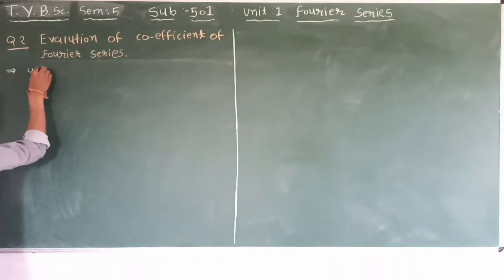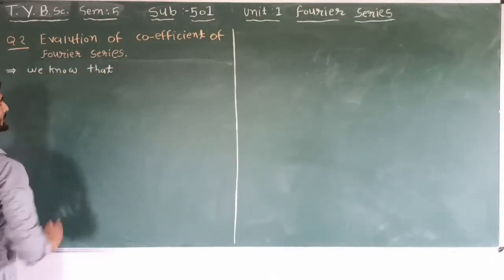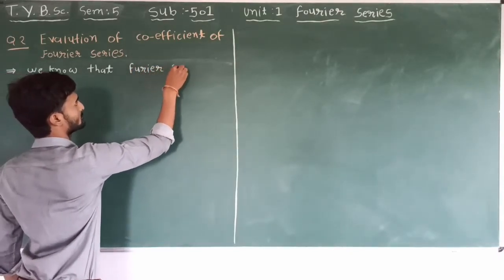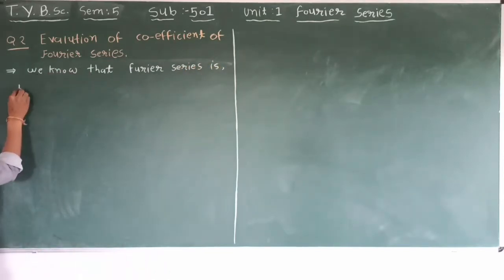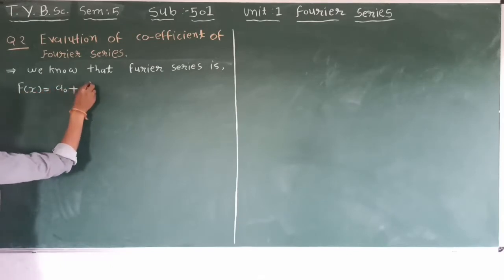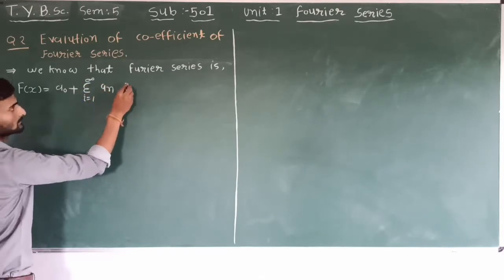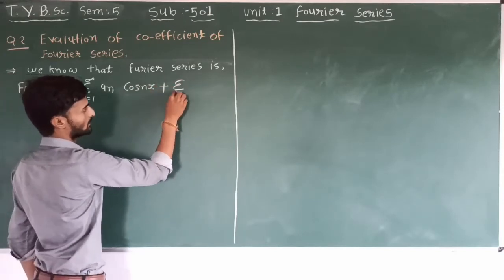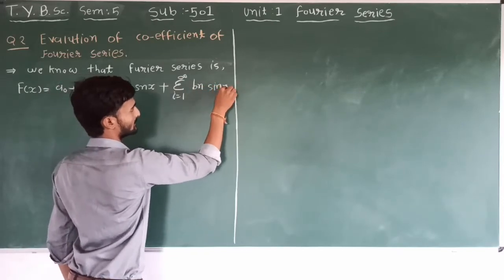We know that the Fourier Series is: F(x) = A0 plus summation of AN cos(nx) plus BN sin(nx).